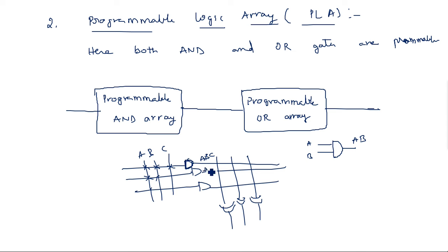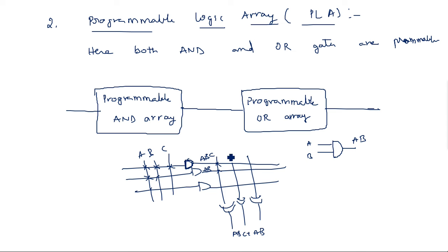Once the programming with a particular logic connection is done, we can reprogram it by disconnecting the fuse, and then use the same device multiple times — that is the meaning of programmable. Programmable Logic Array means both AND gates and OR gates are programmable. In Programmable Array Logic (PAL), AND gates are programmable but OR gates are fixed — depending on connections like F1 and F2, OR gates are fixed and cannot be reprogrammed.